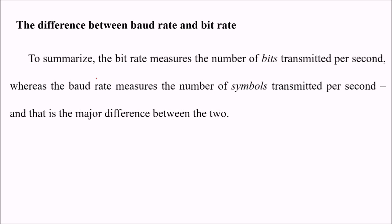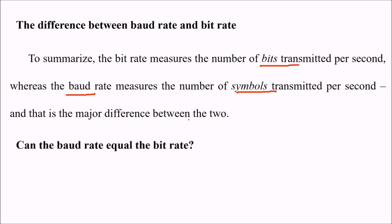To summarize, the bit rate measures the number of bits transmitted per second, while the baud rate measures the number of symbols transmitted per second, and that is the major difference between them.